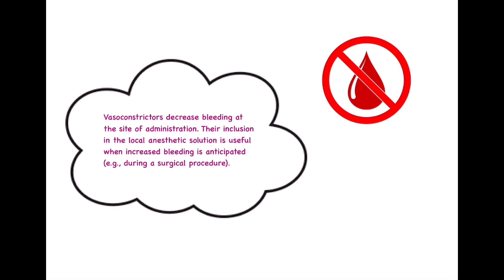The fifth main reason for adding a vasoconstrictor or adrenaline is that it decreases bleeding at the site of administration. We need a perfect aseptic condition while treating a tooth to prevent secondary infection. Epinephrine has the inherent quality of vasoconstriction; whenever there is vasoconstriction, the blood flow or perfusion is greatly decreased, thereby reducing the chances of bleeding. The inclusion of epinephrine in the local anesthetic solution is particularly helpful when increased bleeding is anticipated, especially during surgical procedures such as third molar surgery.